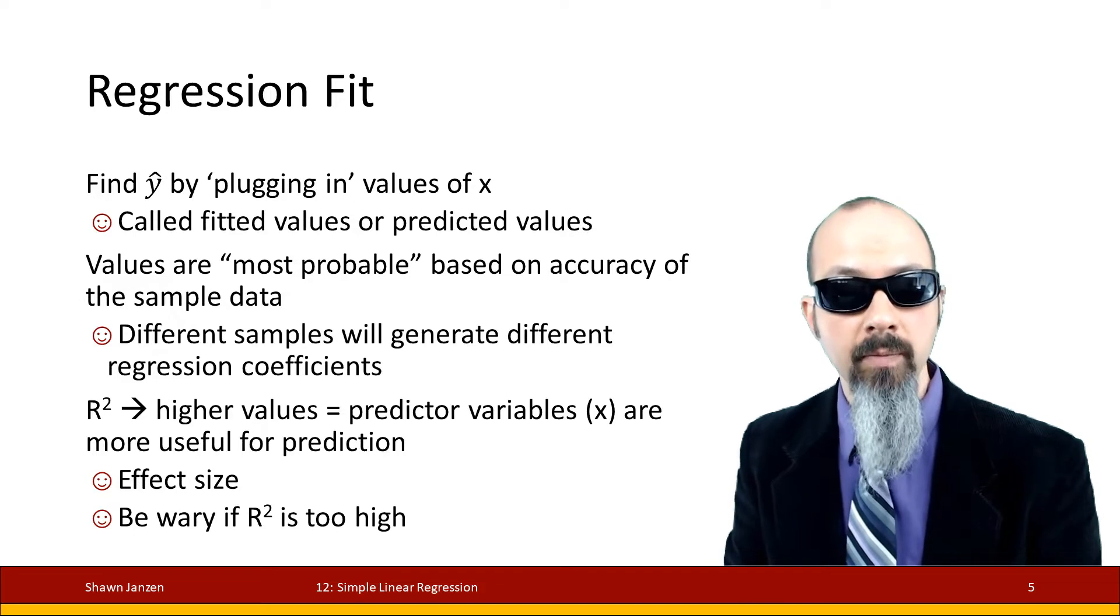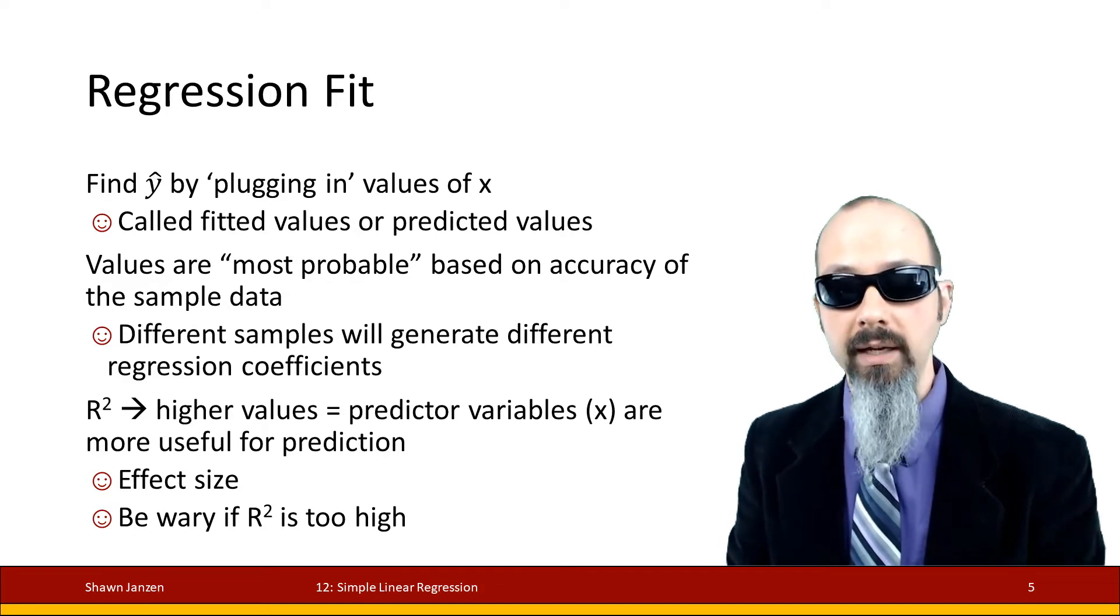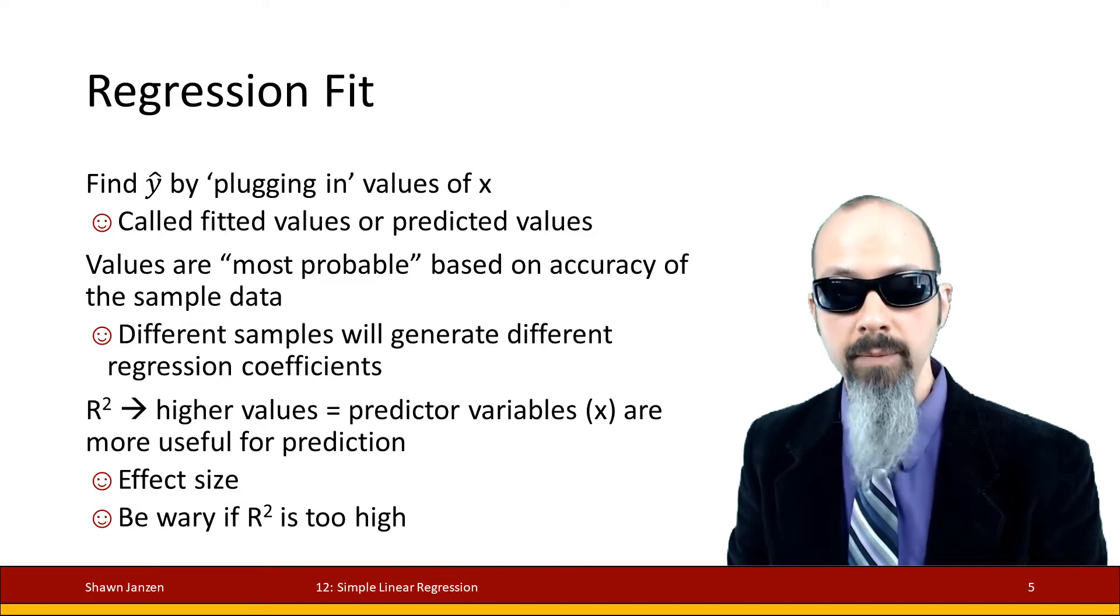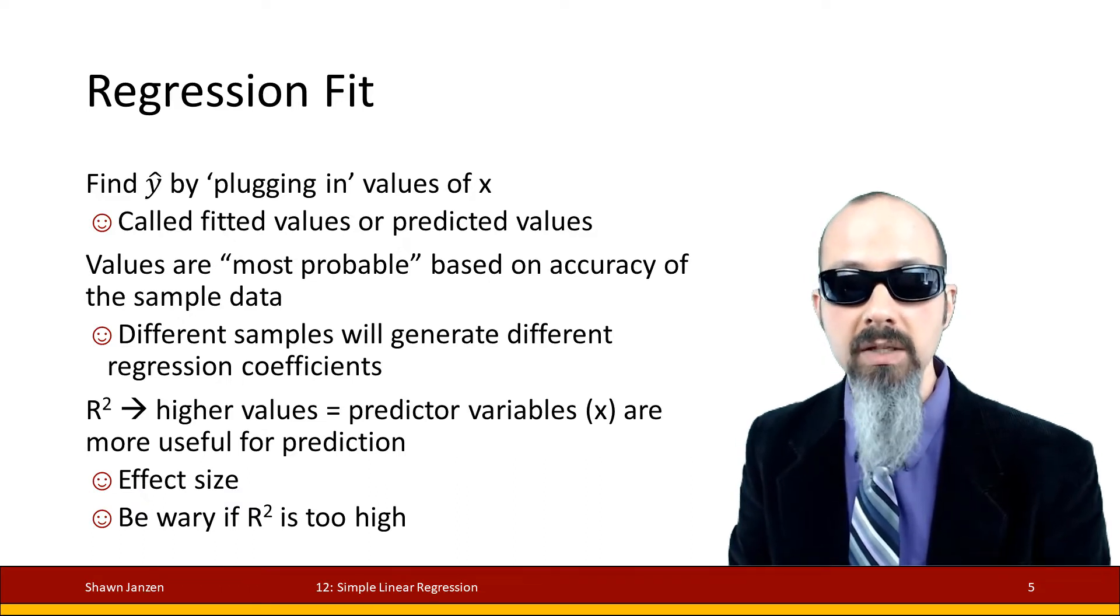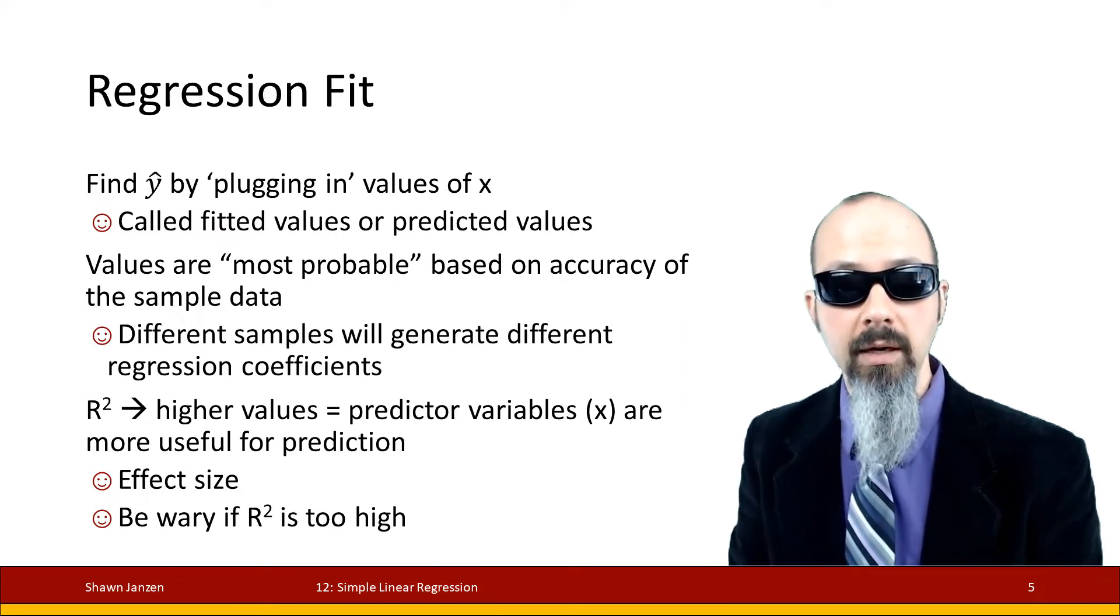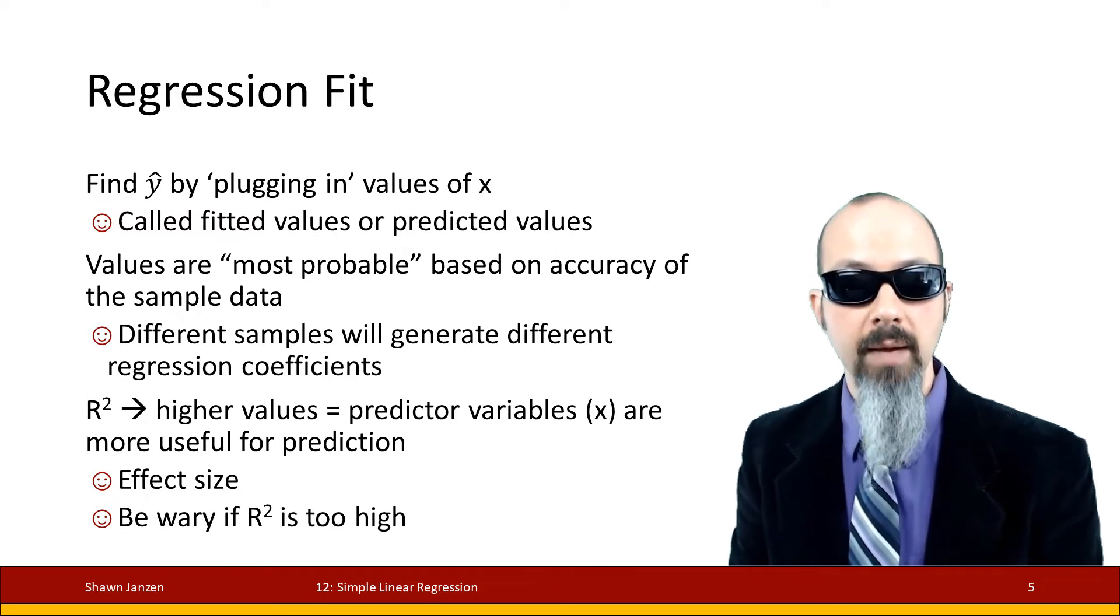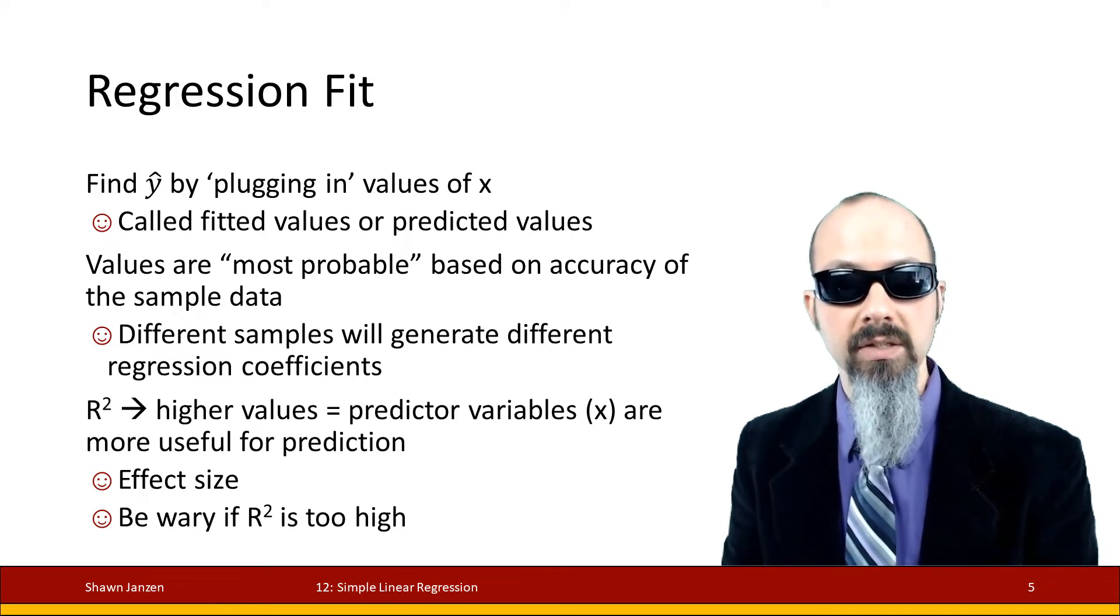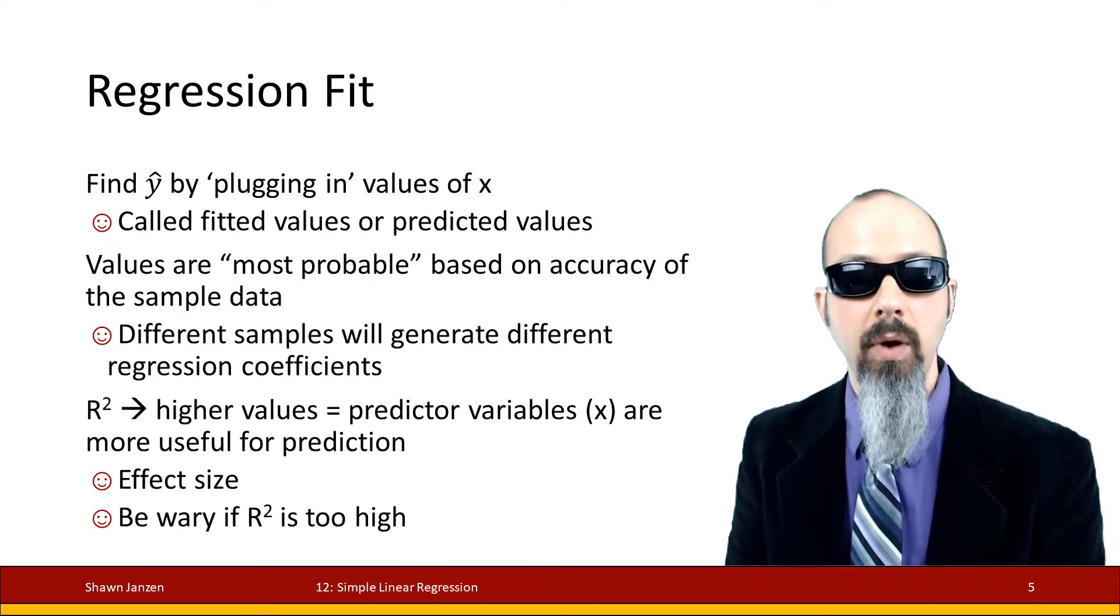Every time you go out and get a different sample, it's quite likely you're going to get different coefficients in your regression, just like you would get different means when we did exercises on exploring sampling distributions and the central limit theorem. As you get sample after sample, you'll get different results, but those results should start to approximate what you would find as the population's parameter.